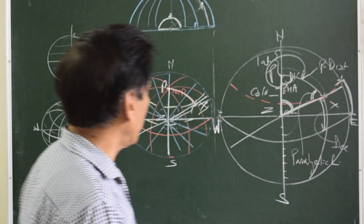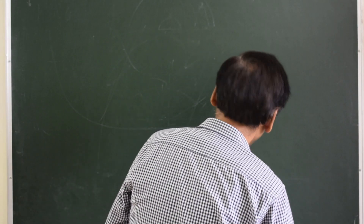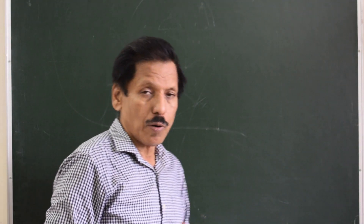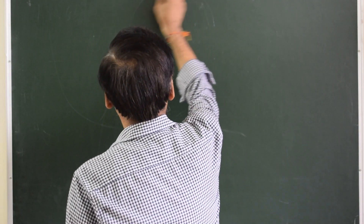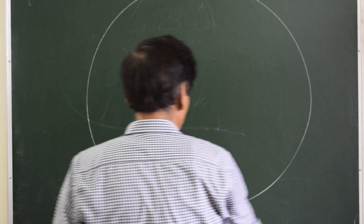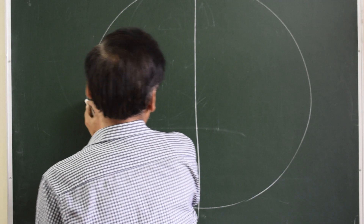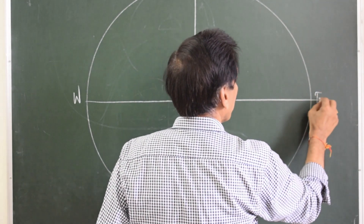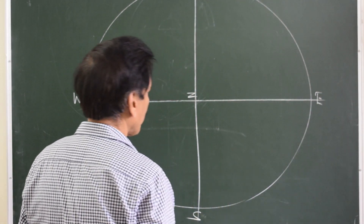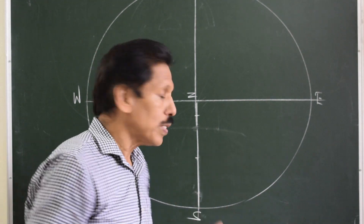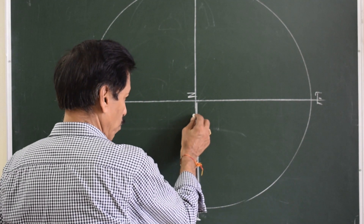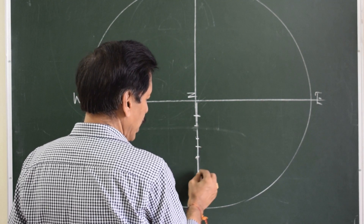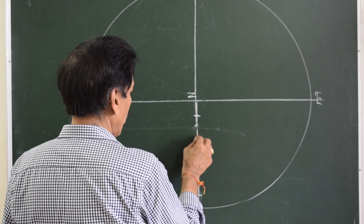Once again, to draw a celestial sphere diagram in the plane of the observer's rational horizon, I draw a circle and divide it into four parts. Each part is equivalent to 10 degrees, so the equinoctial comes here. Here is the observer's zenith, and the north-south direction. Observer's latitude is 30 degrees, so the equinoctial comes to the south by 30 degrees. I divide the arc from here to here to be 90 degrees, divide it into nine parts; each part is equivalent to 10 degrees, so the equinoctial comes here.